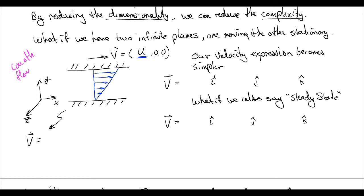Likewise, if we have no velocity in the z direction and nothing is changing in the z direction, then we can just remove that dimension from our expression, and we can write u as a function of x, y, and t, and v is a function of x, y, and t. And if we say steady state, it becomes even simpler. U is a function of x and y, and v is a function of x and y. And this is mostly where we're going to live, is in a steady state two-dimensional system.